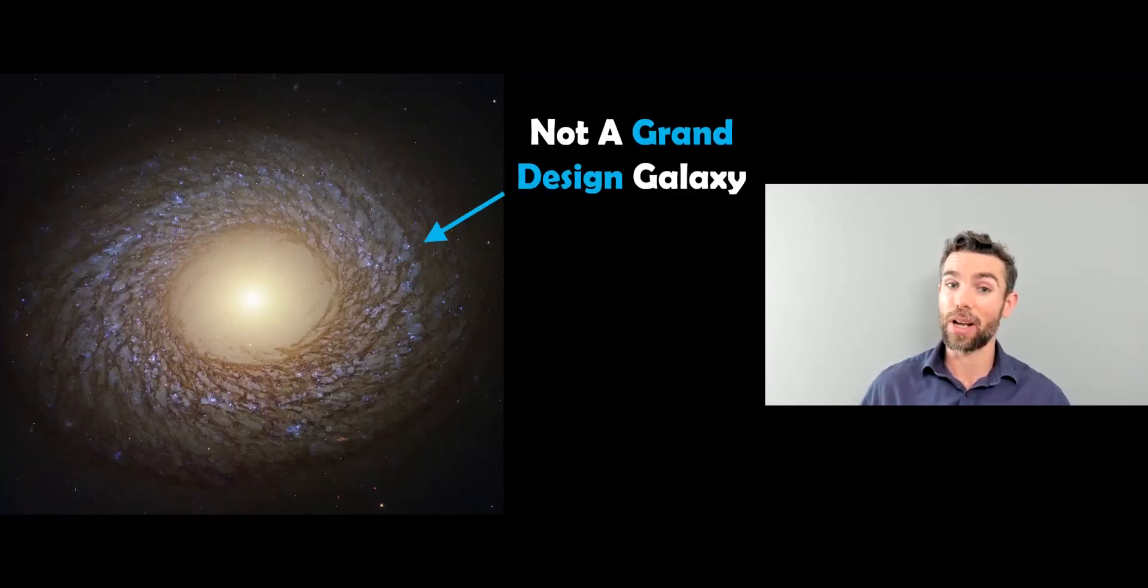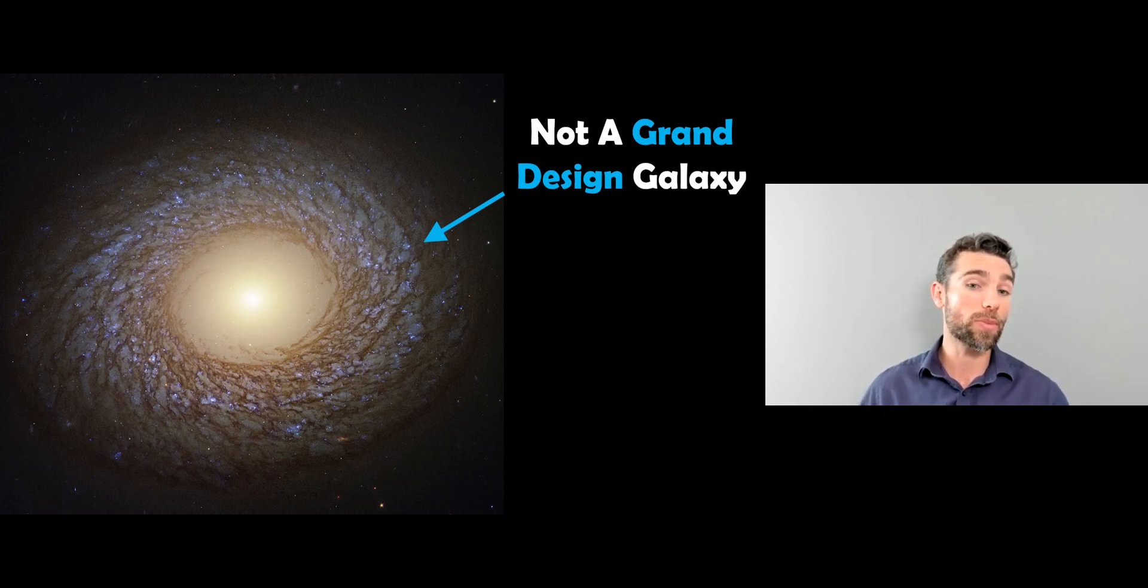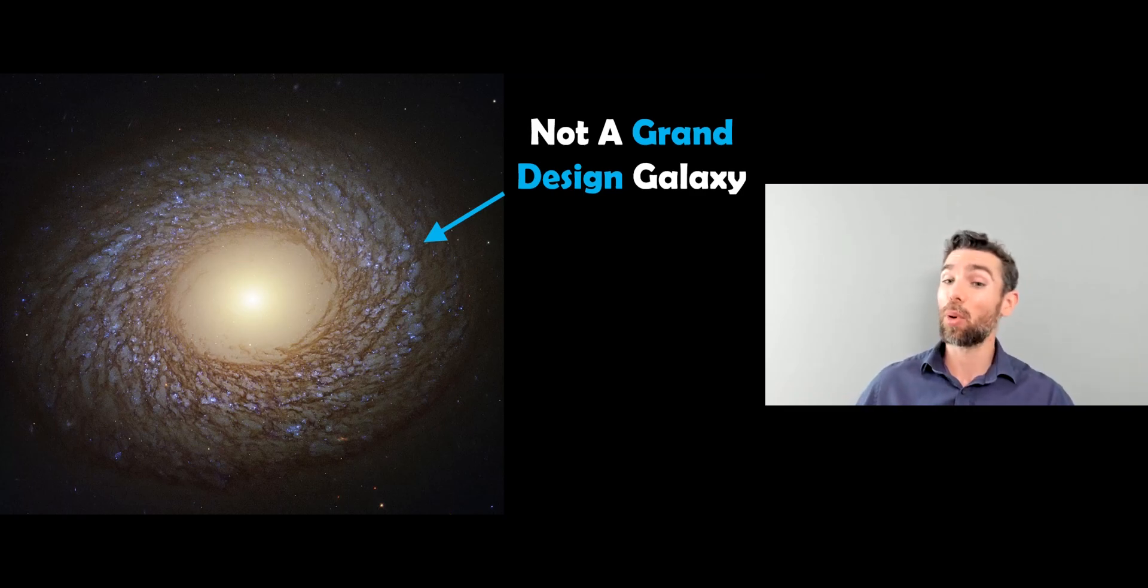This for example, is not a grand design galaxy. You can see there's no clear, prominent spiral arms. They don't extend from the center to the outer part. If there are any spiral arms associated here, they are patchy, they're not complete. So a non-grand design spiral galaxy might be more patchy, might be more multi-arm.